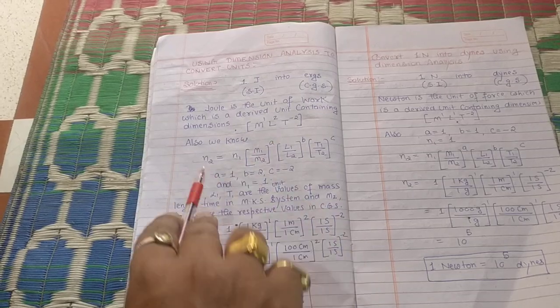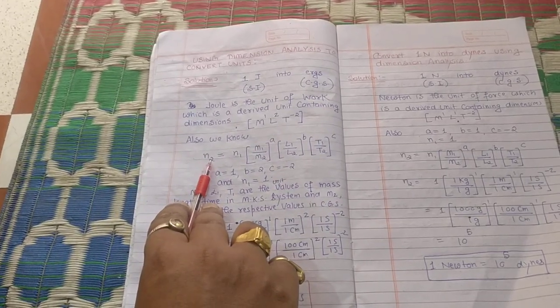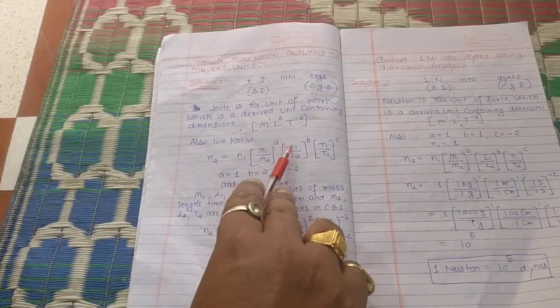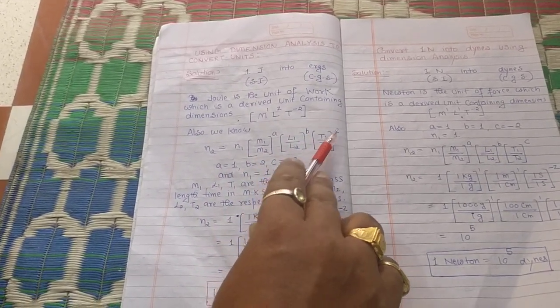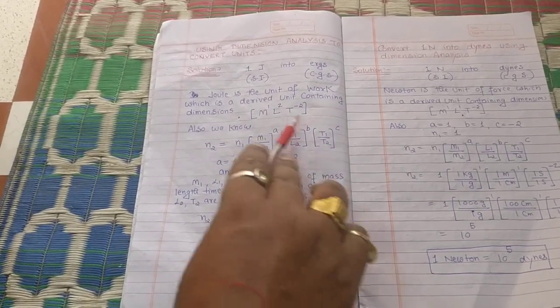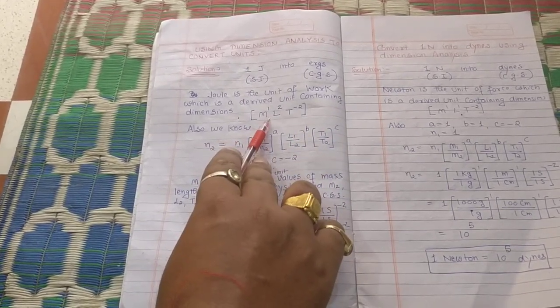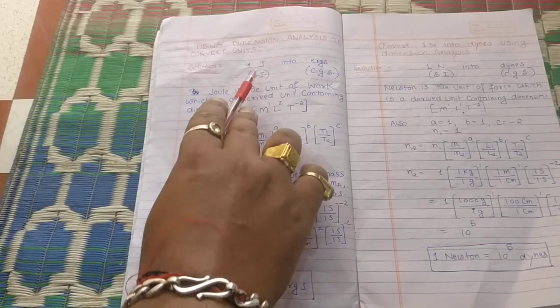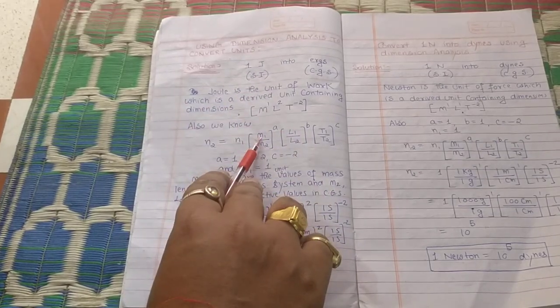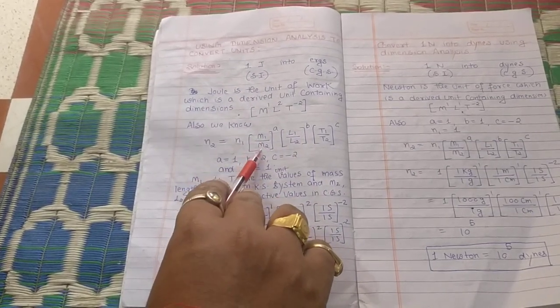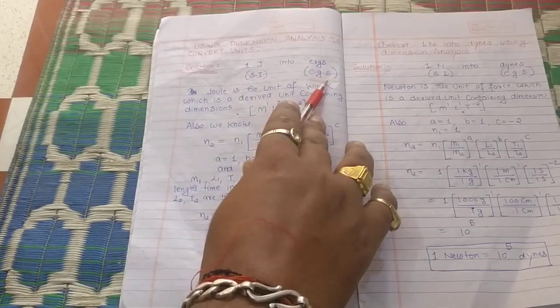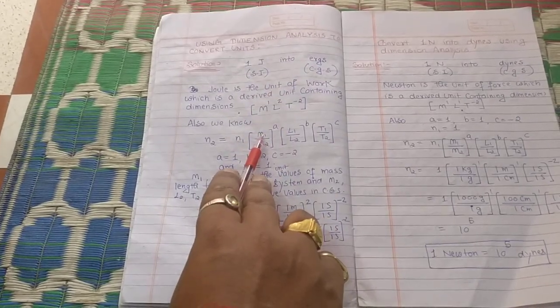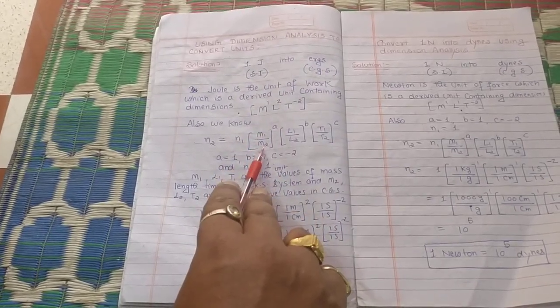We have to remember the formula regarding conversion of units: N₂ = N₁ × (M₁/M₂)^A × (L₁/L₂)^B × (T₁/T₂)^C, where A, B, C can be derived from the dimension of work. M₁ is the SI system mass and M₂ is the CGS system mass. When converting joule into erg, you will use M₁ in the SI system and N₂ in CGS system.